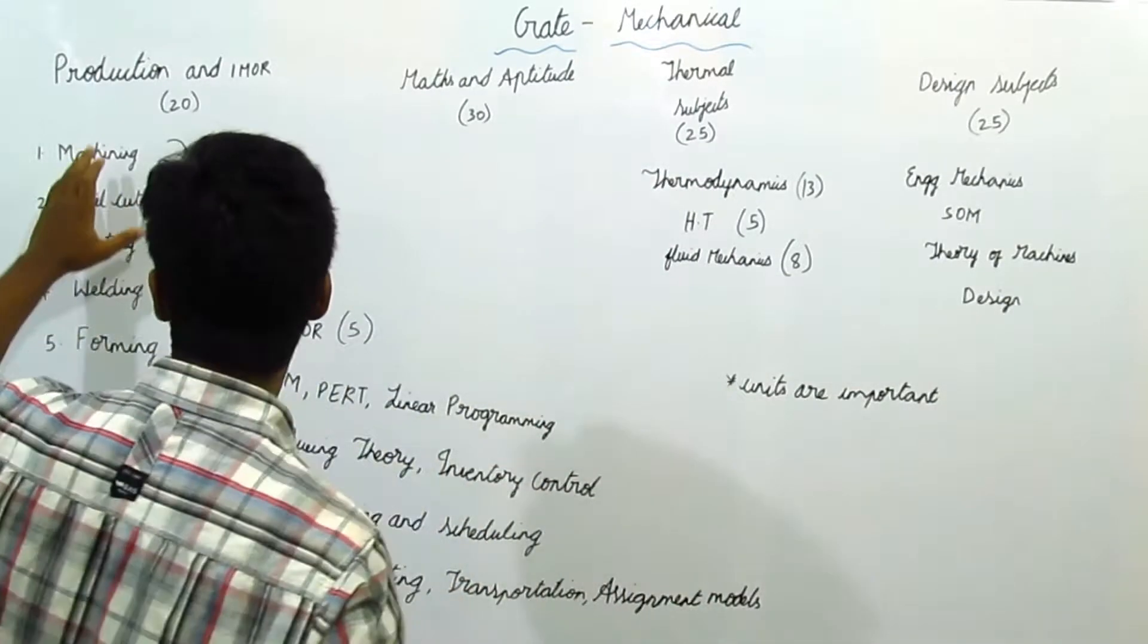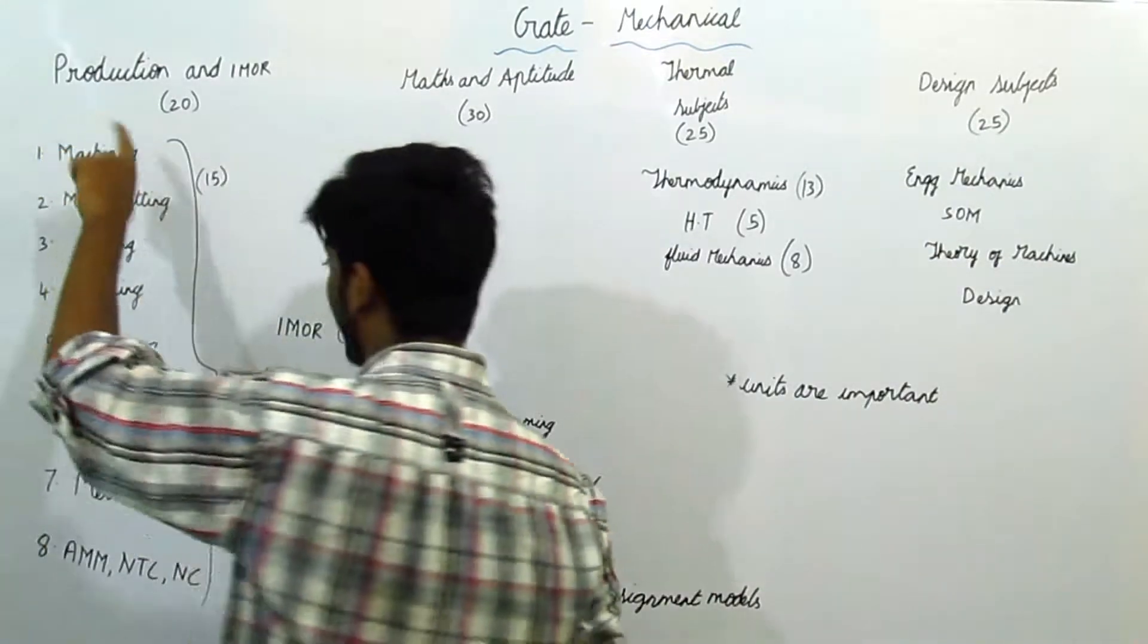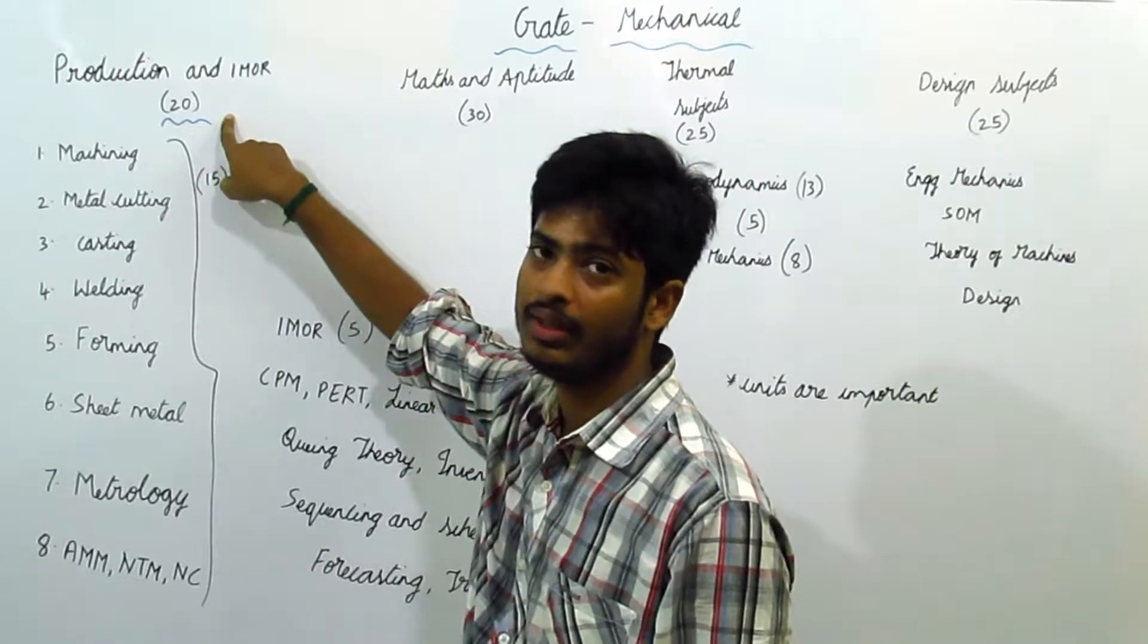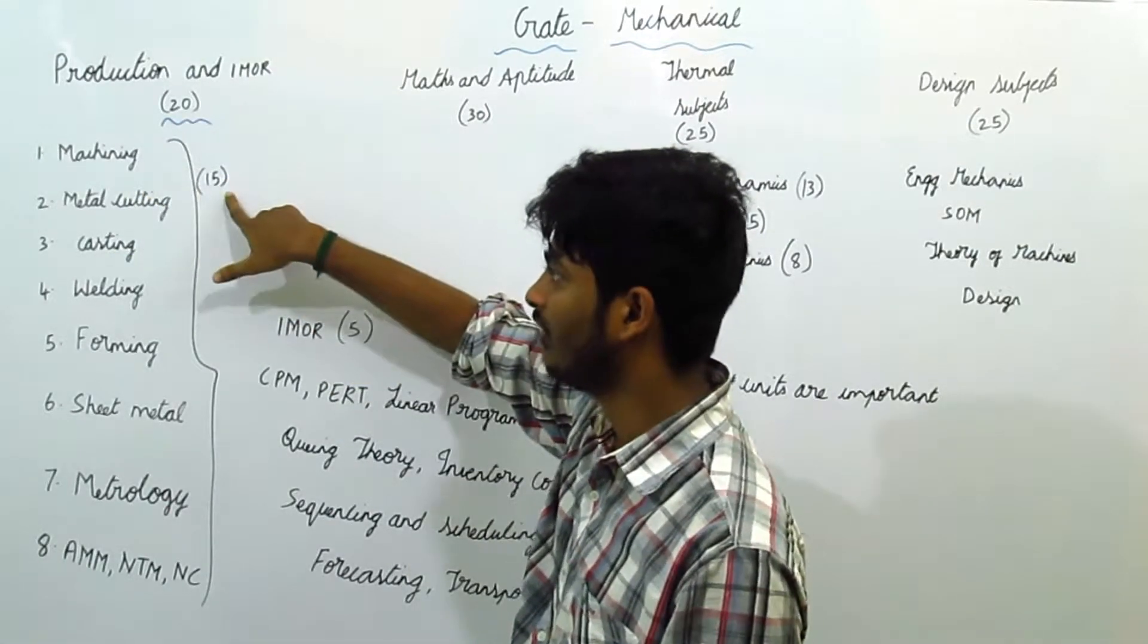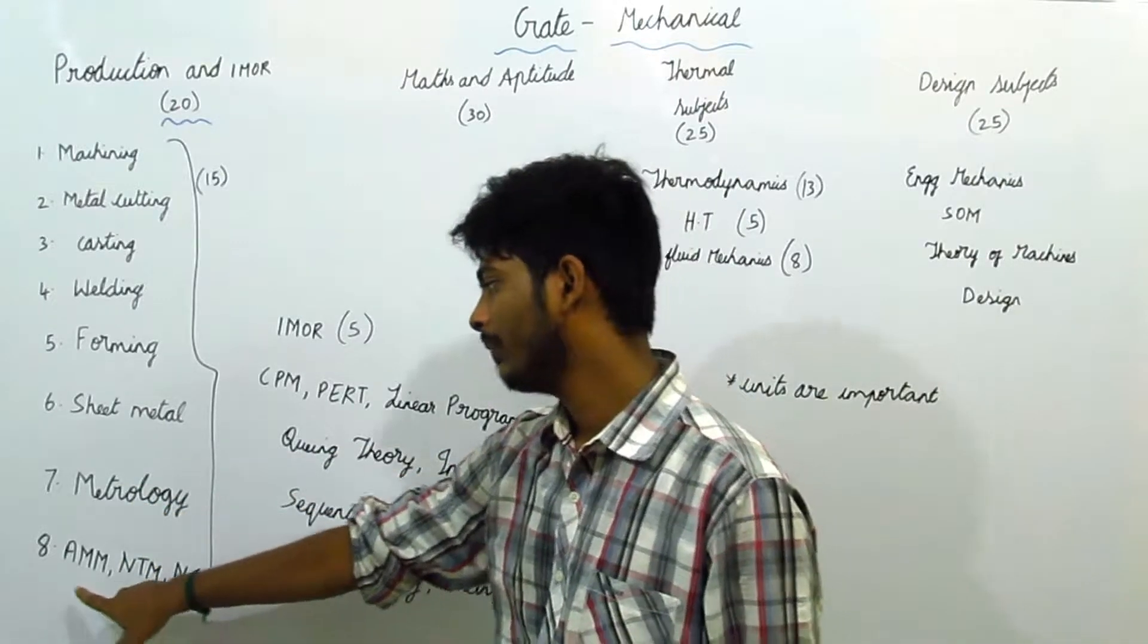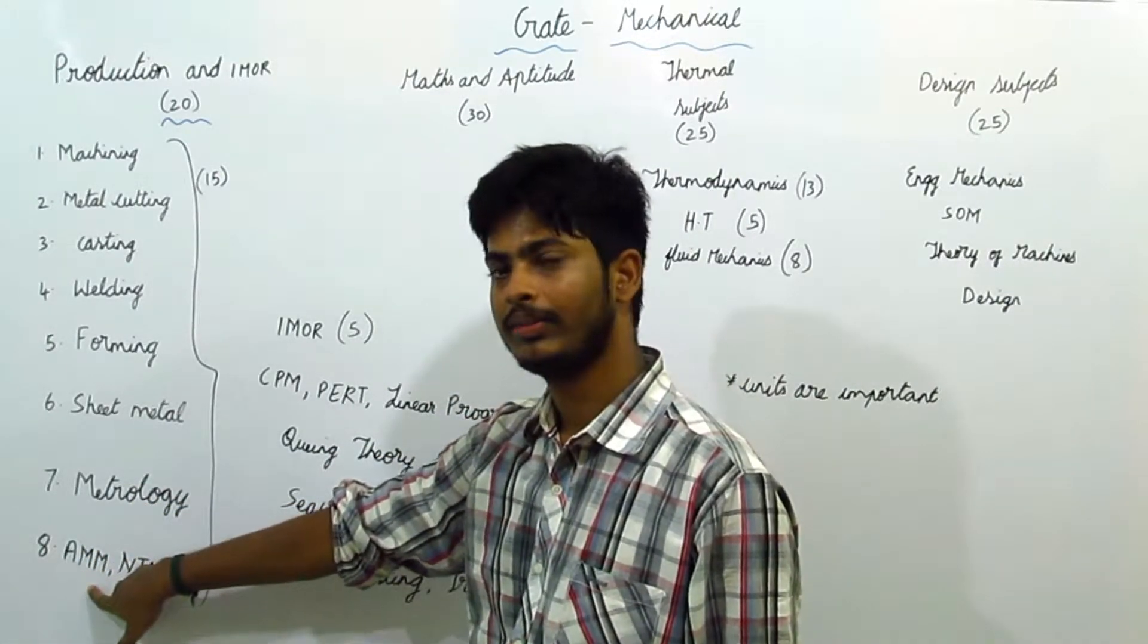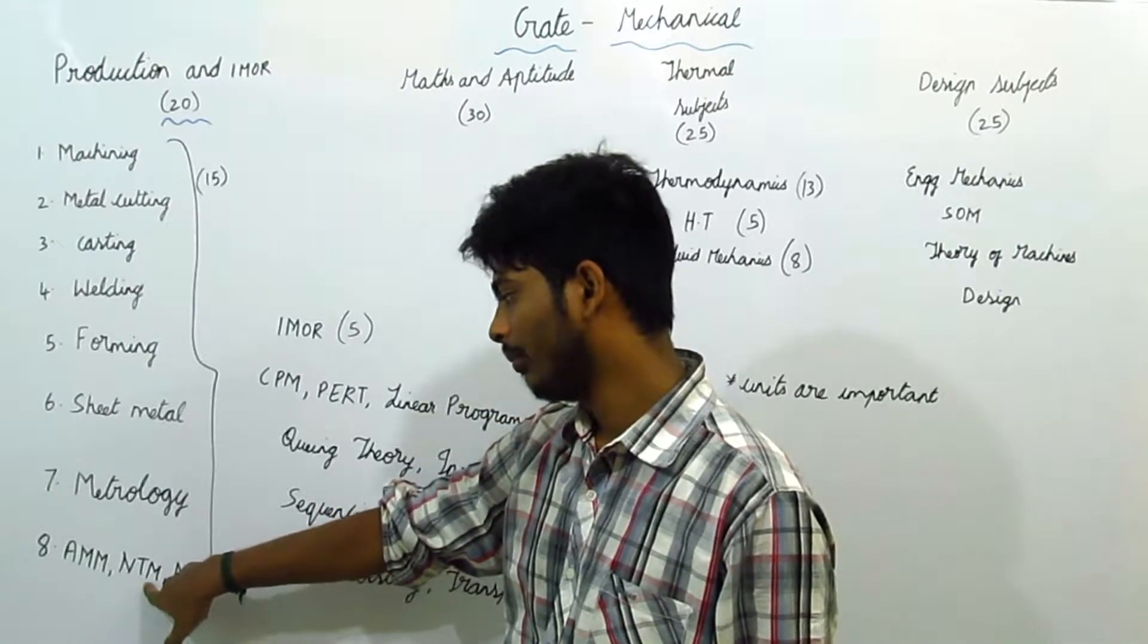These are the important topics under production. First, I will start for production. Under production at I1OR, for Gate Exam, they may ask 20 marks. For production album, they may ask 15 marks. Under production we have machining, metal cutting, casting, welding, forming, sheet metal, metrology. AMR refers to R-pass machining methods. And NPM refers to non-traditional machining methods.